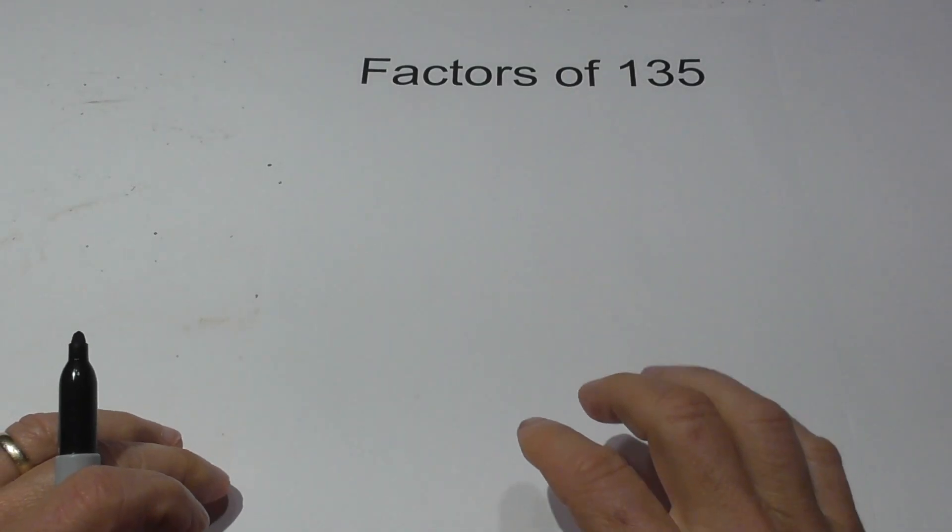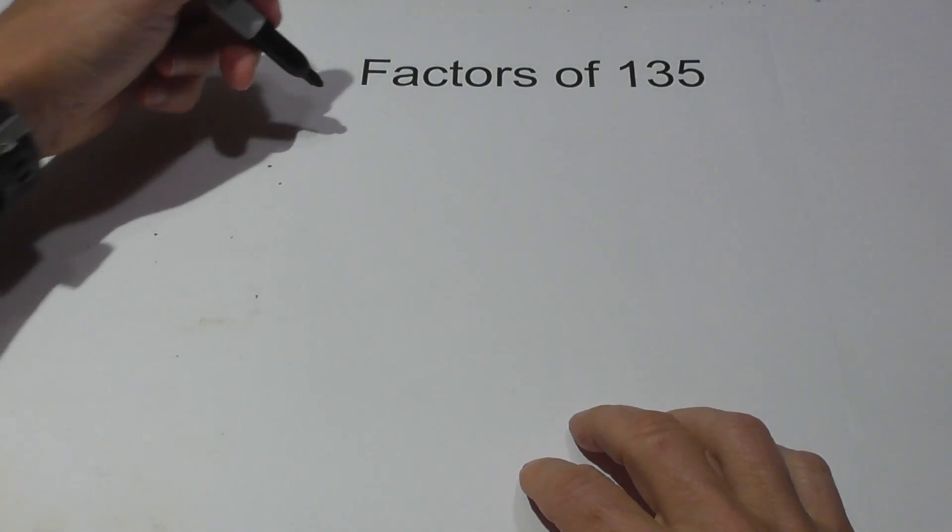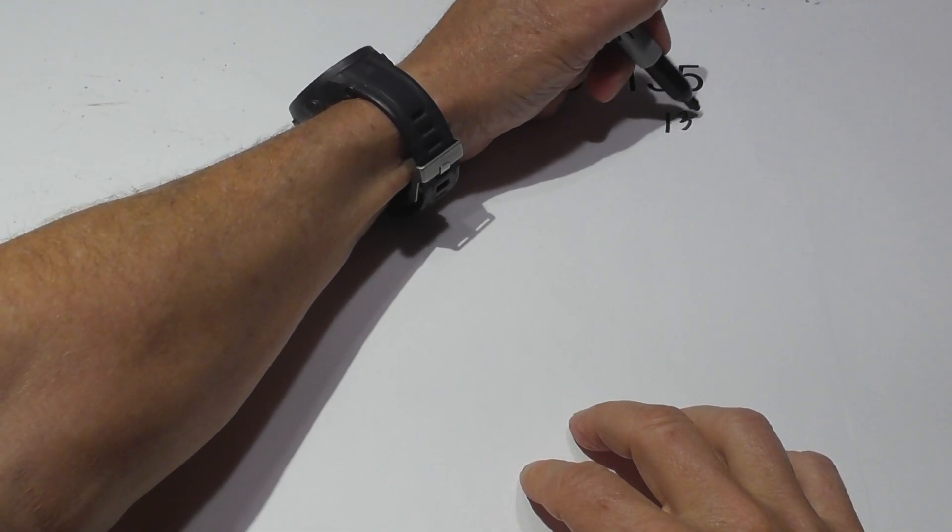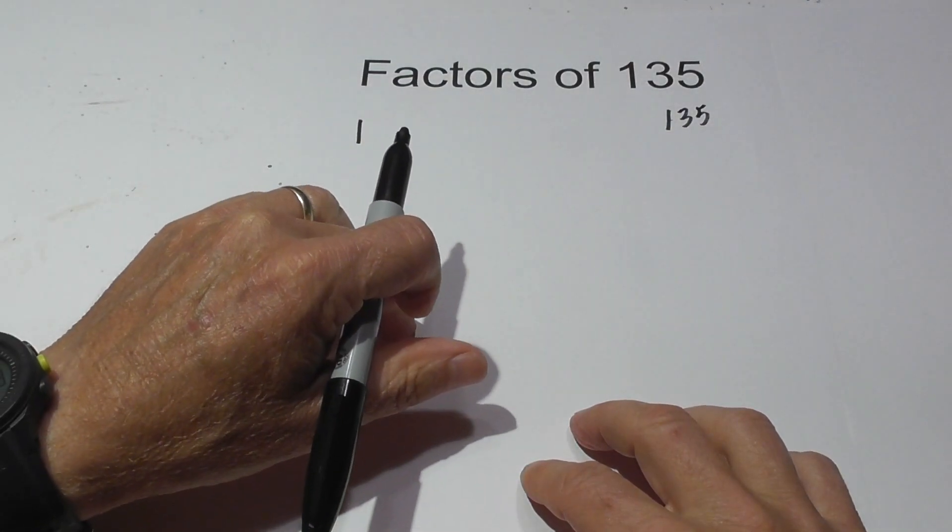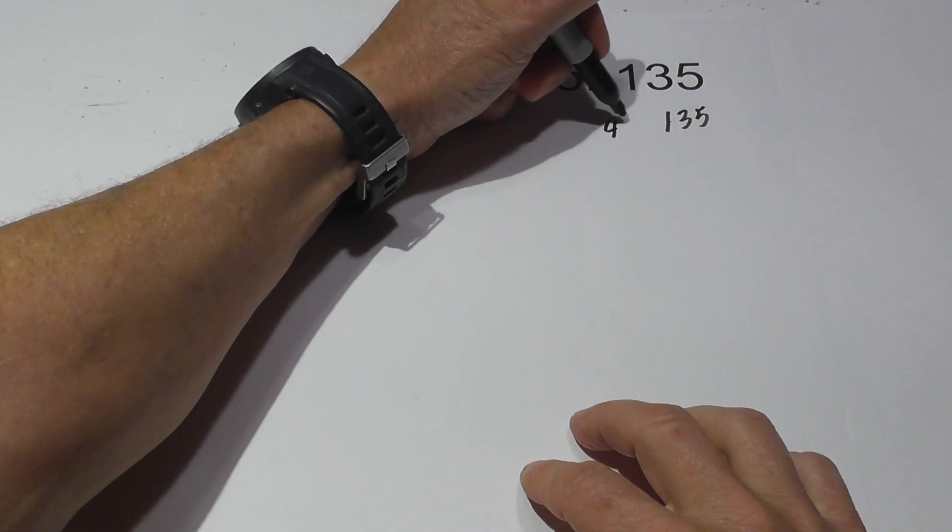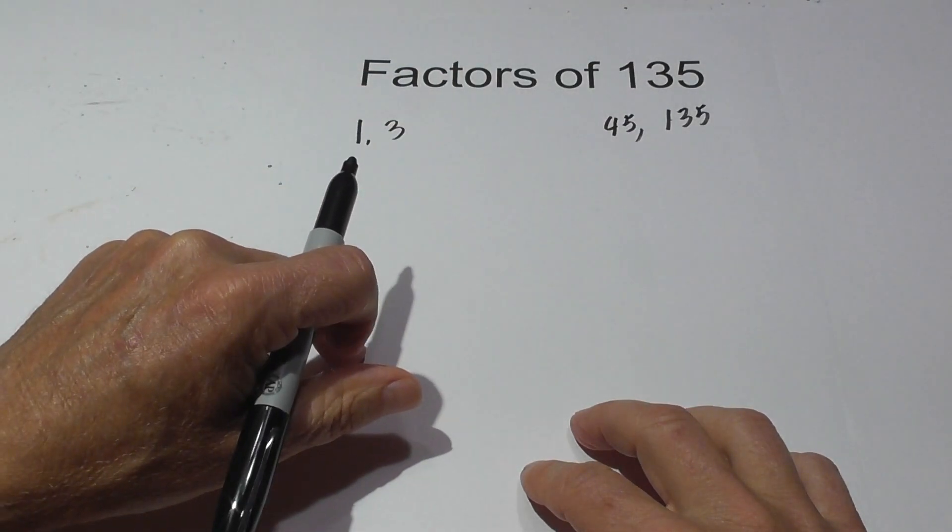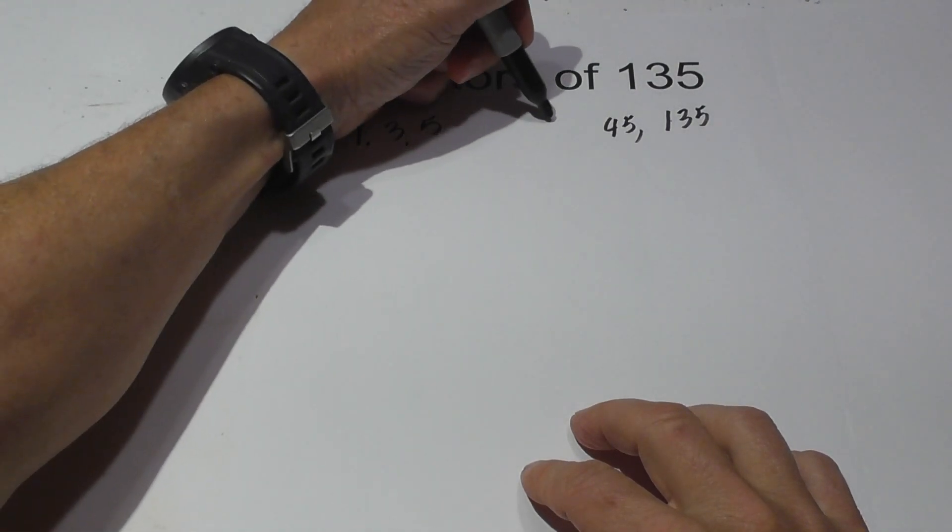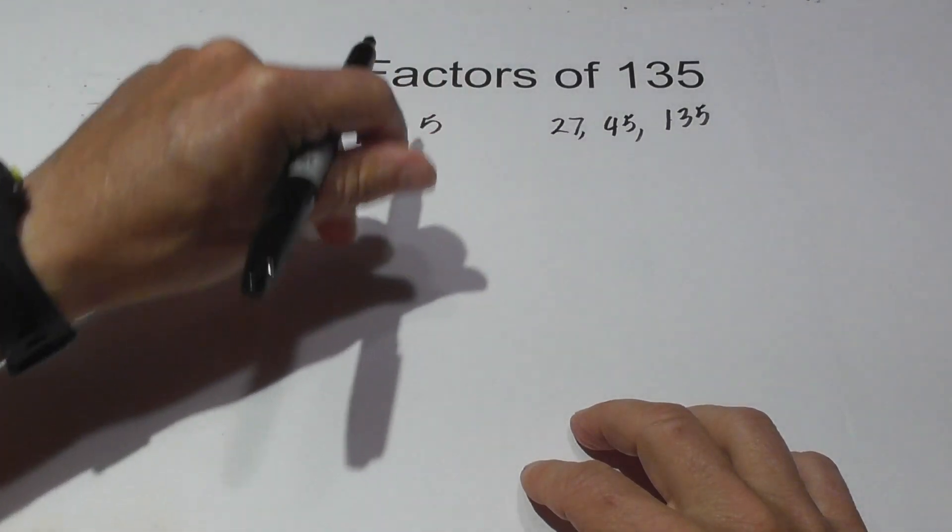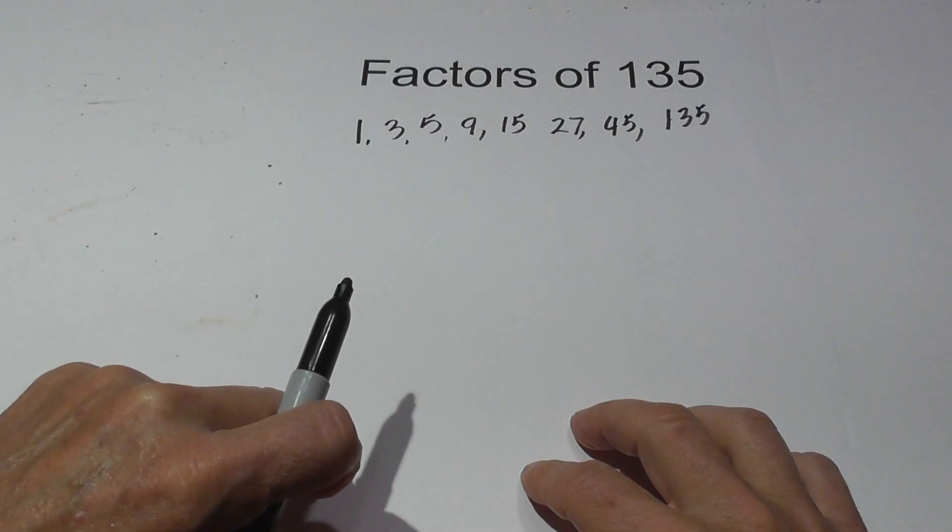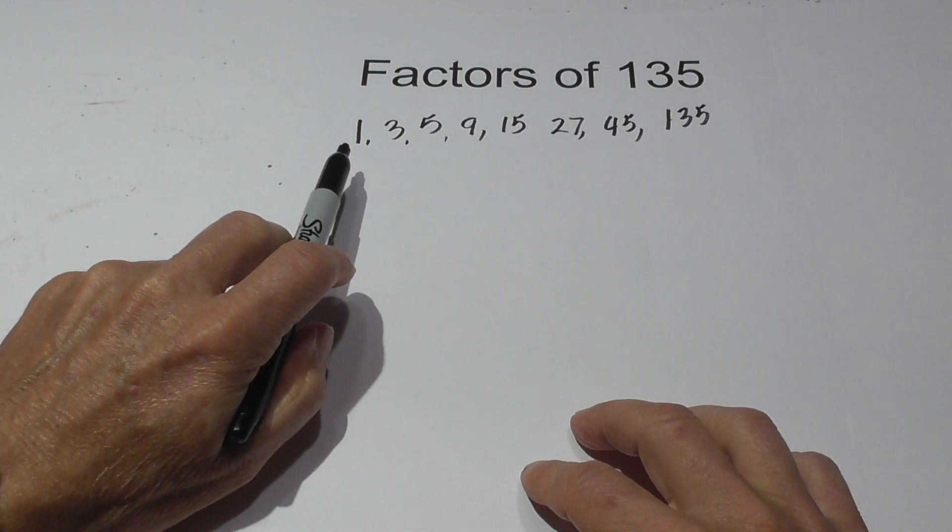Welcome to Moo Moo Math and Science and the factors of 135. 135 is a composite number so we'll begin with 1 times 135, next we'll go 3 times 45, next we have 5 and 27, and then 9 and 15.